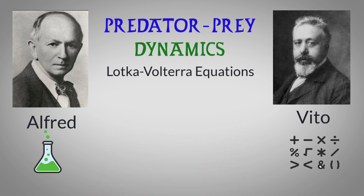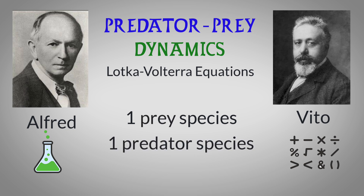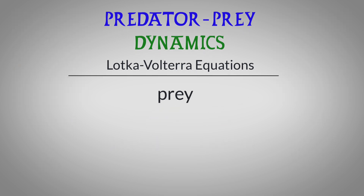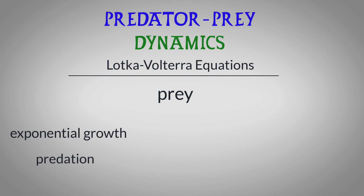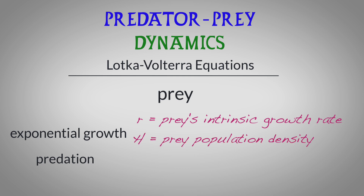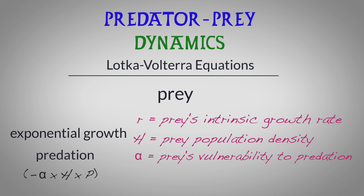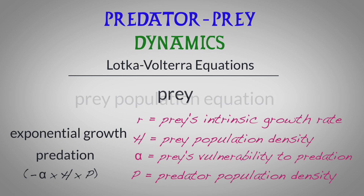These equations assume a simple system with one prey species and one predator species, where they interact with each other in a continuous fashion over overlapping generations. The prey population is modeled by an equation that considers two opposing forces: exponential growth and predation. In the absence of predators, the prey population would grow indefinitely at some rate R, which is the prey's intrinsic growth rate. H is the prey's population density. Predation acts as a balancing force that reduces the prey population, represented as negative alpha multiplied by Hp, where alpha is a constant reflecting the prey's vulnerability to predation, and p is the predator's population density.